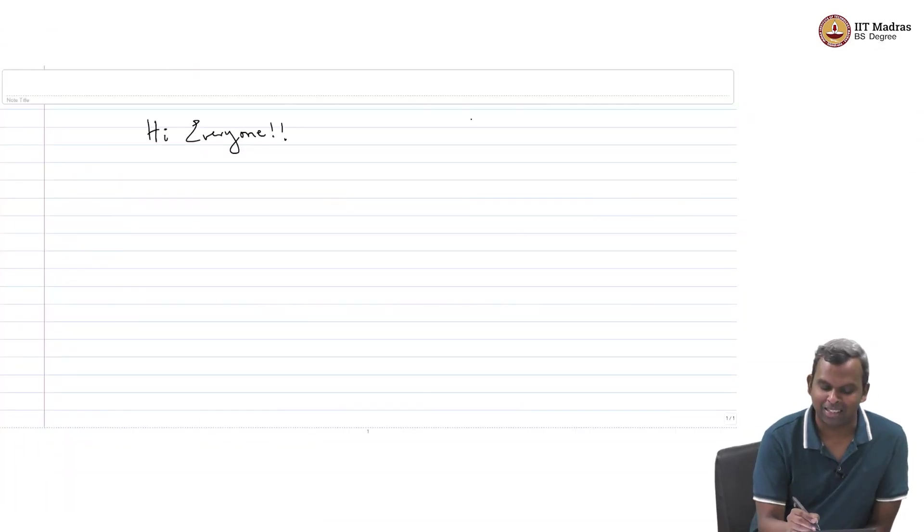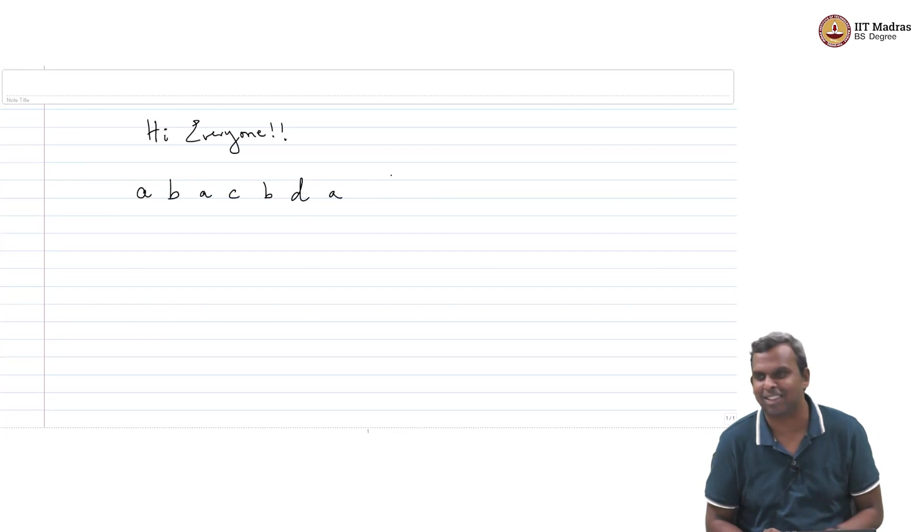So the question goes something like this, it is actually a very old question. Supposing I give you a sequence of letters, right, so let us say A, B, A, C, B, D, A, C, okay, let us leave it like that. So it is 7 letters, not too many, but anyway. So I give you a sequence of letters.